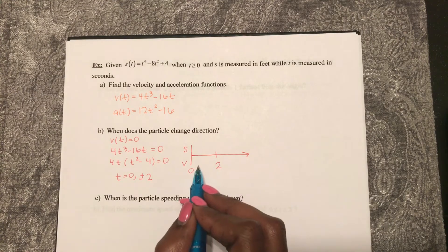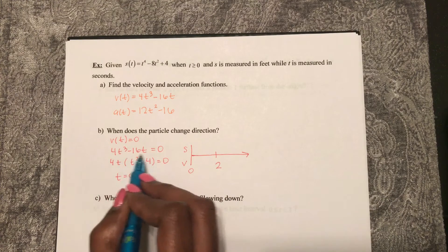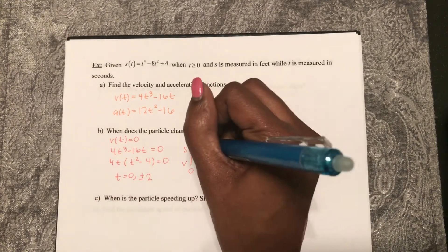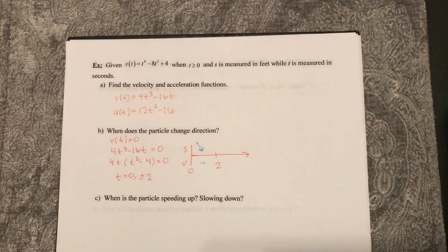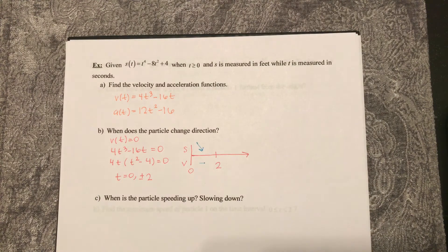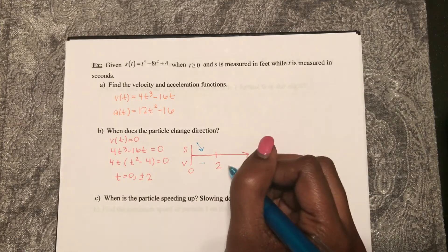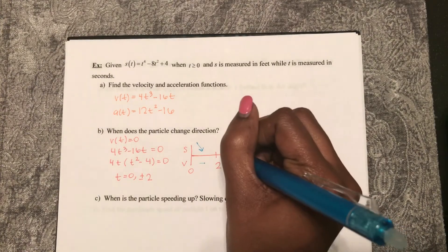So if I plug in 1 and 2 into my velocity function, I'll get a negative, which means I'm moving in the negative direction for my position. And then when above 2, my velocity is positive.